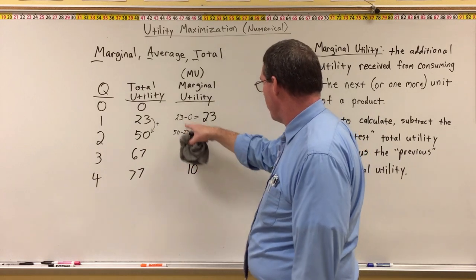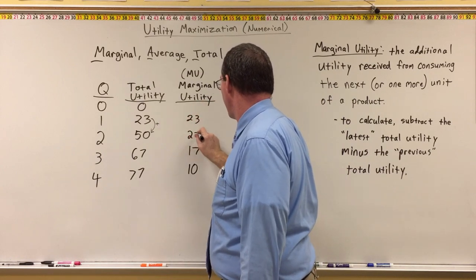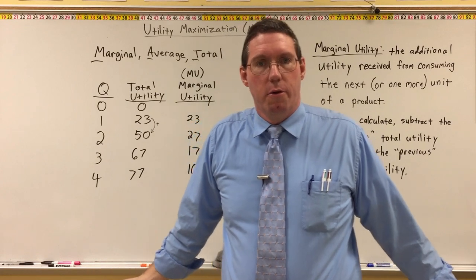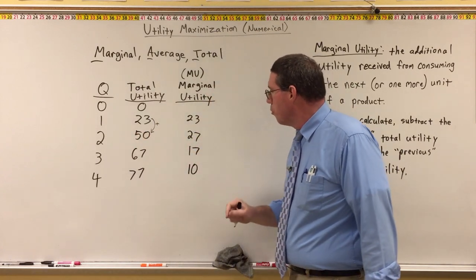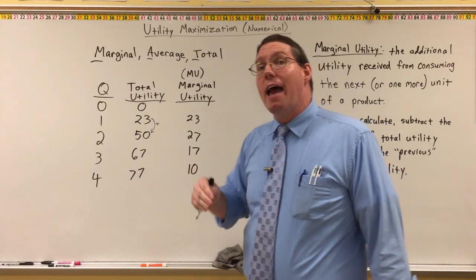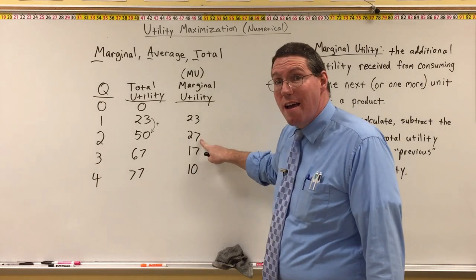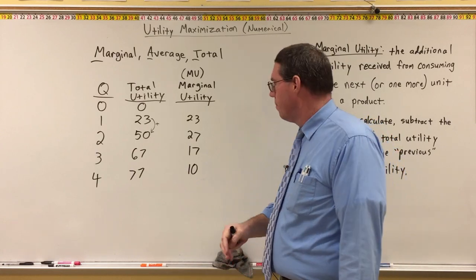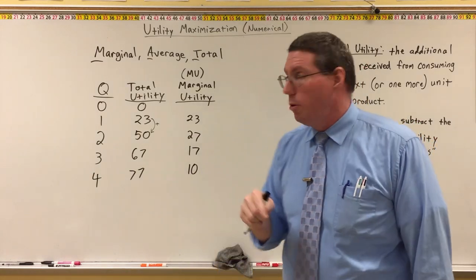So we have marginal utilities of 23, 27, 17, and 10. There is no marginal utility for zero taquitos. The marginal utility of the first taquito is 23 — I will improve my life by 23 utility if I eat one taquito. After eating one, I can improve my life by 27 with a second. A third taquito improves my life by 17, and a fourth by 10.